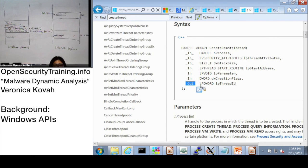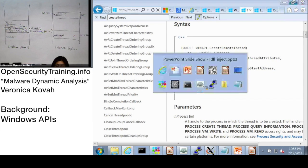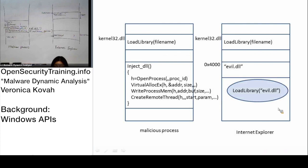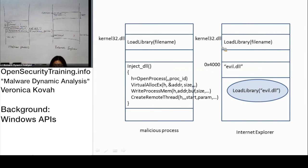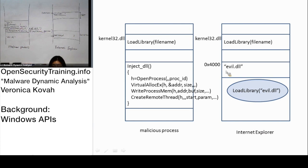Everything else is input, and it returns a thread ID once it creates a thread. When this function is called, Windows actually creates a thread at the start address of load library - that's one simple example. The malicious process can specify a different code address. It specifies the address of evildll.dll. If that DLL string has not been copied into Internet Explorer's own memory space, it cannot access it from the malicious process by default.